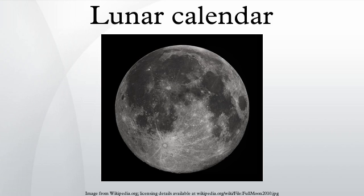The length of each lunar cycle varies slightly from the average value. In addition, observations are subject to uncertainty and weather conditions. Thus, to avoid uncertainty about the calendar, there have been attempts to create fixed arithmetical rules to determine the start of each calendar month. The average length of the synodic month is 29.530589 days. Thus it is convenient if months are in general alternately 29 and 30 days. The distribution of hollow and full months can be determined using continued fractions, and examining successive approximations for the length of the month in terms of fractions of a day.